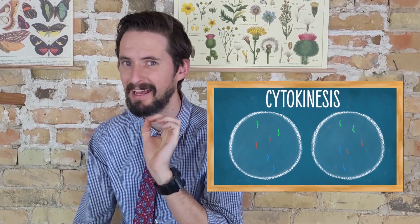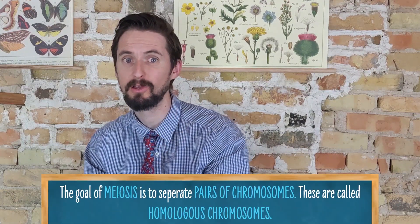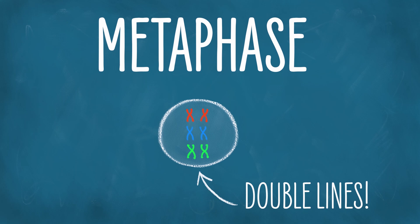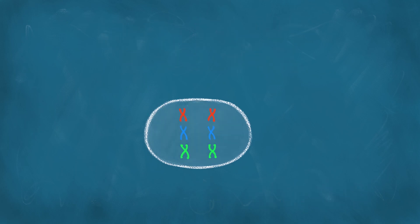Meiosis is the same process but with a different goal: instead of separating identical copies of chromosomes called sister chromatids, it separates pairs of chromosomes called homologous chromosomes. If it lined them up in a single file line like in mitosis, the microtubules would pull apart the sister chromatids and each cell would get a copy of all chromosomes — but that isn't the goal. So instead, meiosis lines the chromosomes up in a double file line where homologous chromosomes are next to one another. In metaphase I, there is a double file line instead of a single file line.